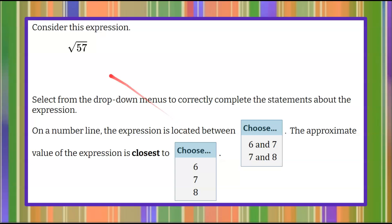Welcome back. So we're talking about the square root of 57 and the first statement we're going to complete is we want to know if the square root of 57 is located between 6 and 7 or 7 and 8. So to visually show this I'm going to create a number line with the value 6, 7, and 8 on it.